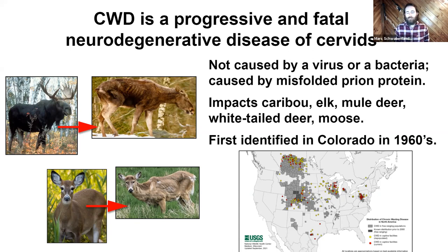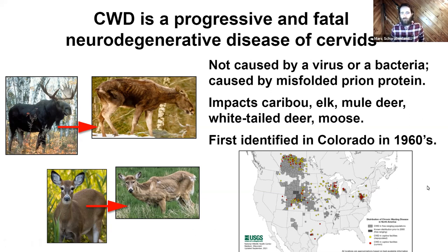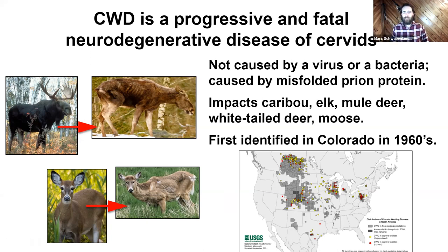Chronic wasting disease was first identified in Colorado in the 1960s. This map, built by USGS and updated continually, shows that epicenter in the dark gray squares in Colorado. Since the 1960s, CWD detections have spread across North America quite rapidly — really in the last 20 years it has spread the furthest.